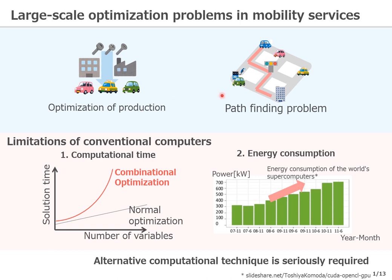Autonomous vehicle technology is also emerging, and in the future we will have to think about all the combinations of paths of many, many cars in the city at the same time. Here we encounter two challenges to solve these large-scale optimization problems: the computational time and the energy consumption.